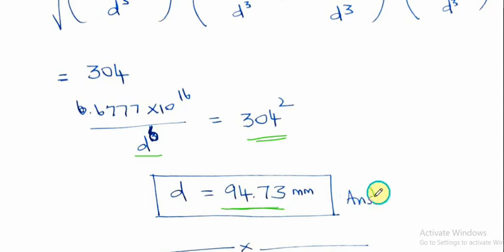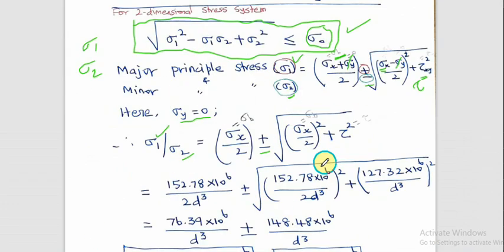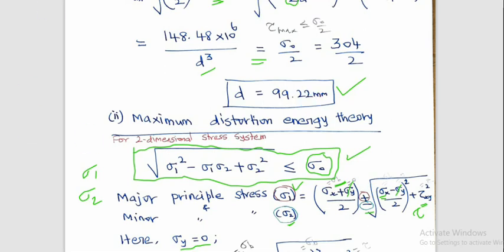So using the two methods: the maximum distortion energy theory gives a diameter of 94.73 mm, and the maximum shear stress theory gives 99.22 mm. These are the final answers. Thank you.